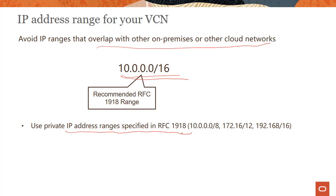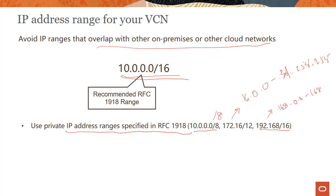Our recommendation is to use private IP address ranges specified in RFC 1918. RFC 1918 was used to create the standards by which networking equipment assigns IP addresses in a private network. RFC 1918 reserves the following ranges of IP addresses that cannot be routed on the internet: the first is 10.0.0.0/8, the second is 172.16.0.0/12 — which goes from 172.16.0.0 all the way to 172.31.255.255 — and the third range is 192.168.0.0/16.